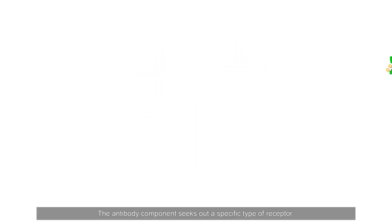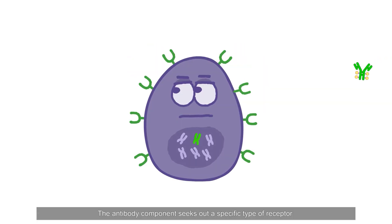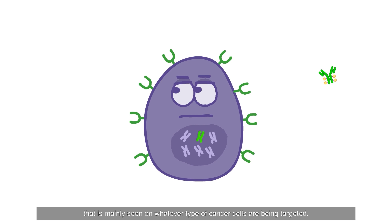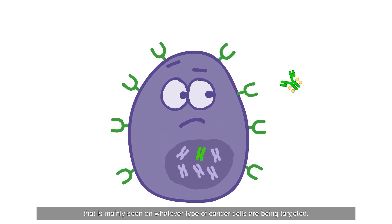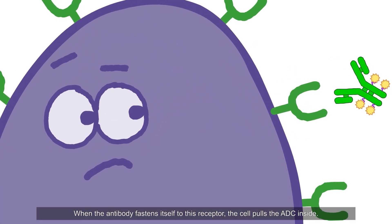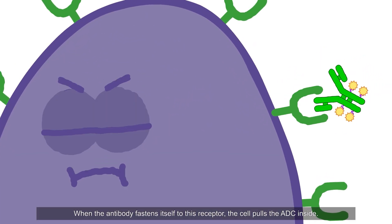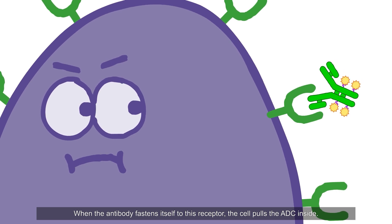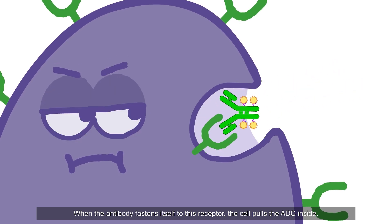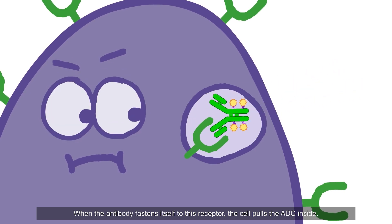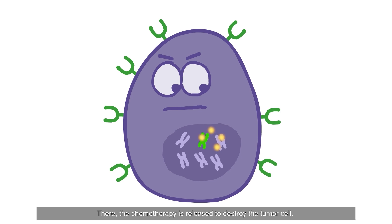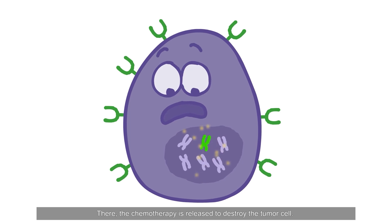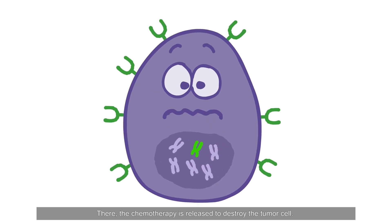The antibody component seeks out a specific type of receptor that is mainly seen on whatever type of cancer cells are being targeted. When the antibody fastens itself to this receptor, the cell pulls the ADC inside. There, the chemotherapy is released to destroy the tumor cell.